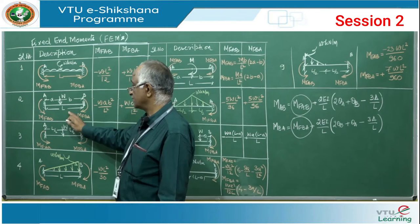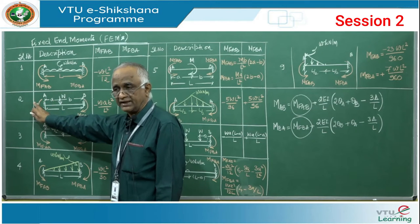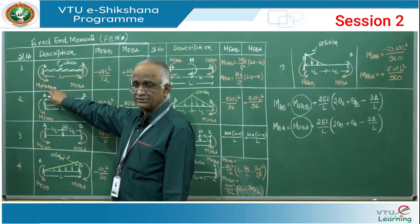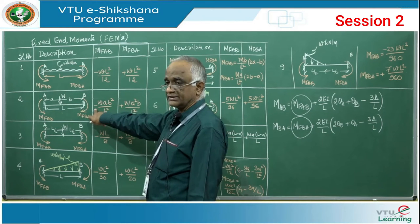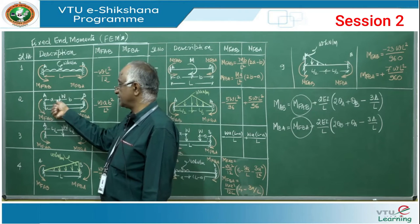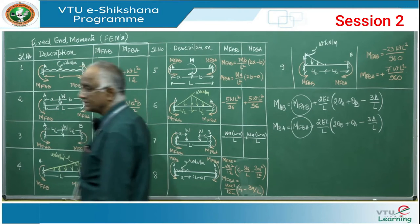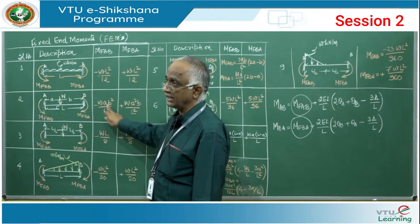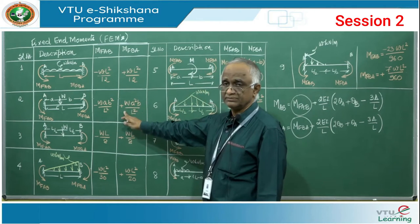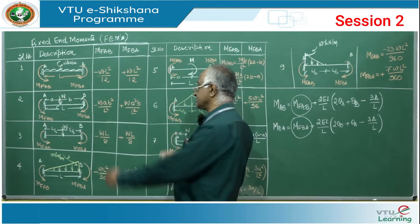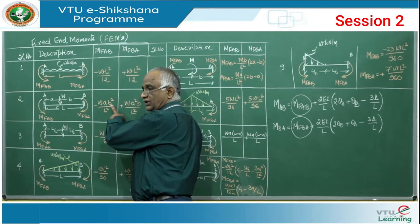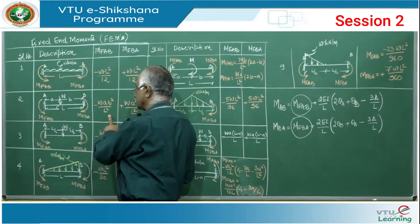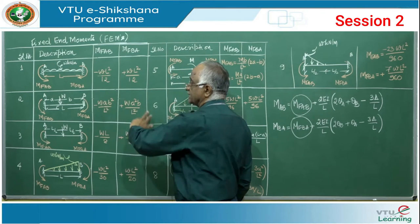For a concentrated load placed unsymmetrically, with distance A from left support and B from right support (A + B = L): M_FAB equals minus WAB²/L², and M_FBA equals plus WA²B/L². The near-end distance is single power and the other distance is squared. When taking the left-hand side it is B² by L², and right-hand side is A² by L².